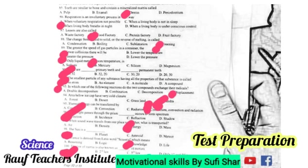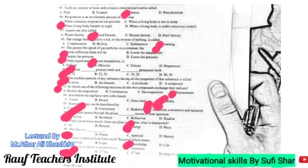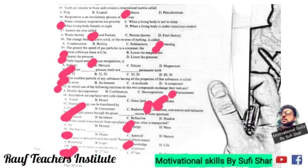Question 86: which function of a living body is under involuntary control? The correct answer is B. When your body breathes at night while you sleep, that is an involuntary process — you cannot stop it. Digestion and respiration are both involuntary processes. The correct answer for 86 is B.